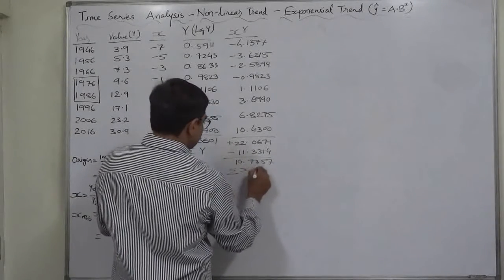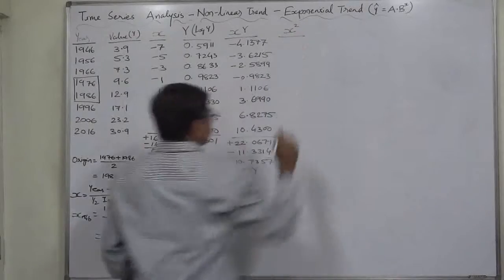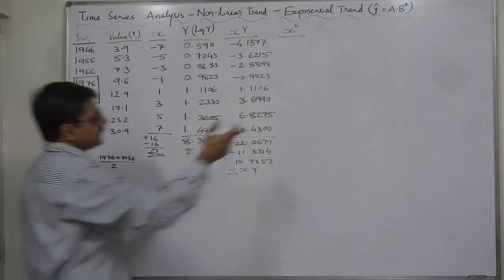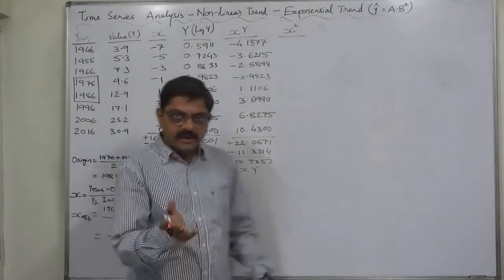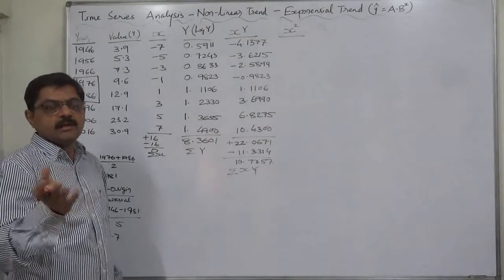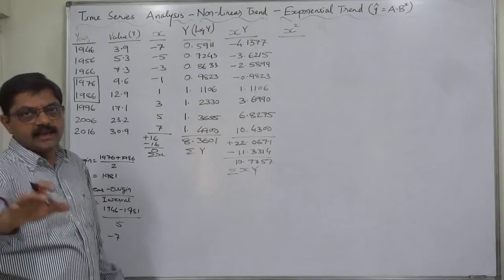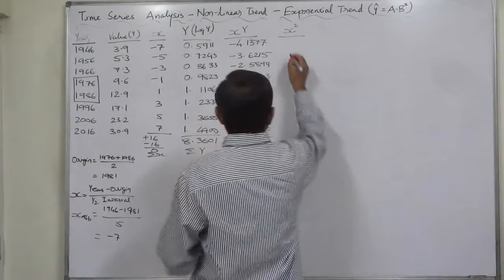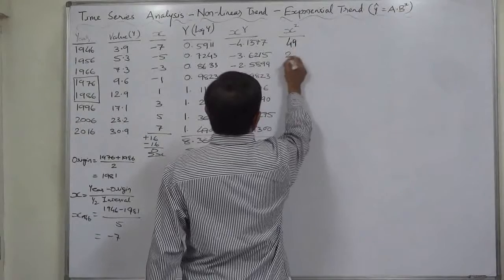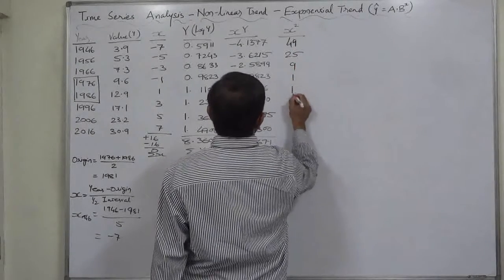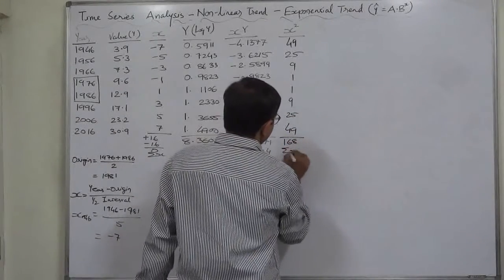The last column needed is x squared. By using logarithms we have converted the exponential trend into something like a linear trend, so the process is almost similar to finding the linear trend. At the last stage we will find the values of capital A and capital B from the logarithmic values of small a and small b using antilog. The x² values are 49, 49, 9, 1, 1, 9, 25, and 49, giving sigma x² equals 168.